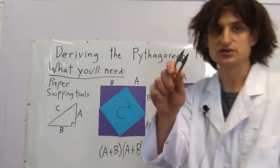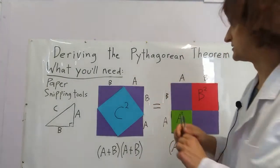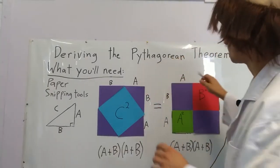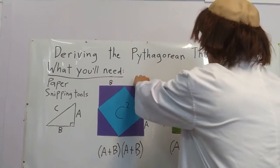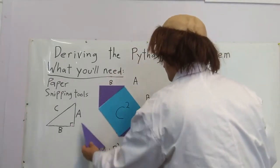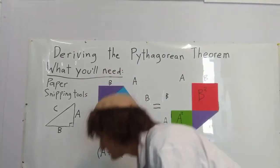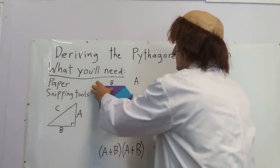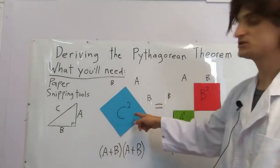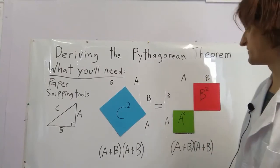Now it's time for an operation. What we do to one side, we have to do to the other side. We'll remove each triangle one at a time from each side — one, two, three, four. And what do we know? We have C squared equals A squared plus B squared. This is the Pythagorean theorem.